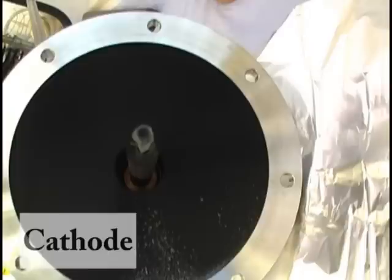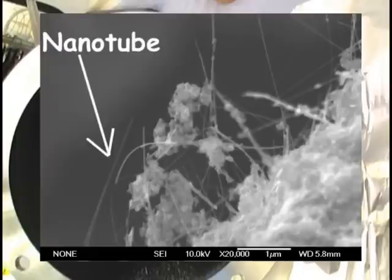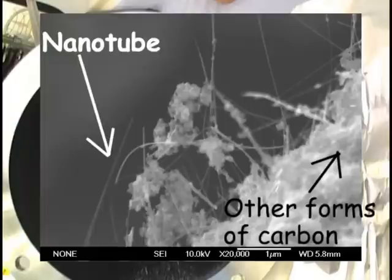The nanotubes made with this technique are quite perfect, free of defects, but the problem is that there are another bunch of carbon forms that are also produced, so then it is very difficult to separate them. It is also hard to make a lot this way.